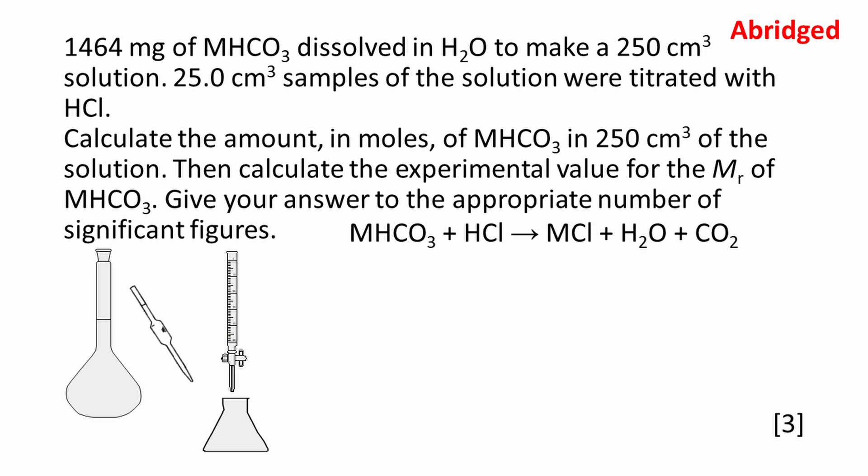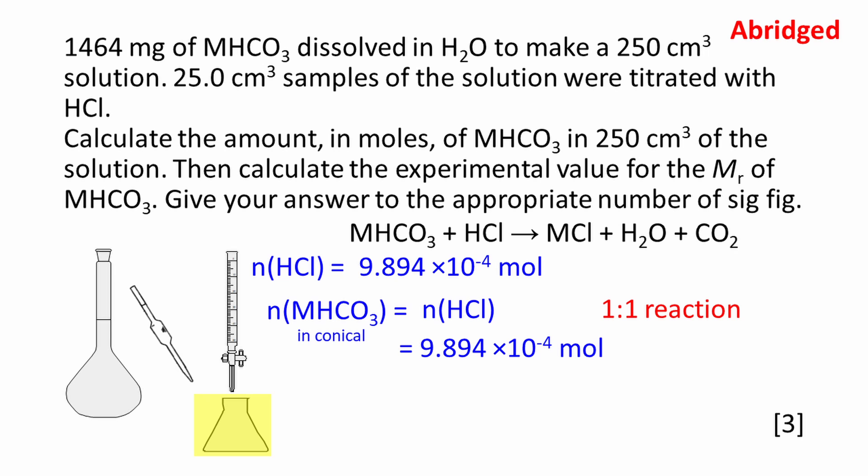Here's the next part of the question. Calculate the amount in moles of MHCO3 in 250 cm³ of the solution. Then calculate the experimental value for the MR of MHCO3. Give your answer to the appropriate number of significant figures. We can see from the balanced equation that this is a one-to-one reaction. At the end point of the reaction, the amount of HCl added to the conical flask is equal to the amount of MHCO3 that was in the conical flask at the beginning of the titration.